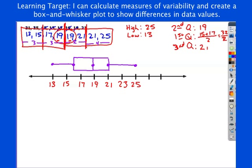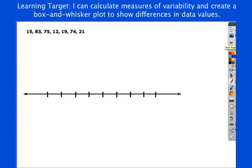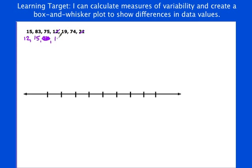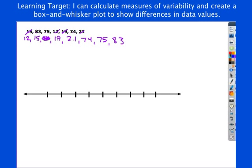Let's do one more. Okay, here we go. Now listen, we've got a couple crazy outliers, so let's put them in order first. We have 12, 15, 19, 19, then 21, 74, 75, and 83. 1, 2, 3, 4, 5, 6, 7. Oh, lucky us, we have an odd number of numbers. Here we go. Okay, middle number, 21.